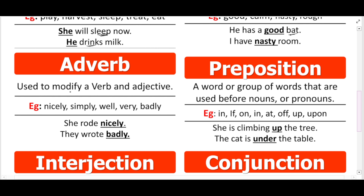Now let's come to adverb. We already read about verb. Adverb means you add something to the verb — it is used to modify a verb or adjective. For example: 'he done nicely' — 'done' is the verb and 'nicely' modifies it. She wrote nicely — 'nicely' is an adverb. They wrote badly — 'badly' is an adverb. The word that modifies the verb and gives more detail about how the action was performed is called an adverb.